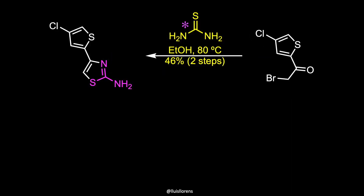Condensation with thiourea produces the thiazolamine ring of the molecule in 46% yield over two steps. This is the Hantzsch thiazole synthesis. When a thioamide or urea reacts with an alpha-halo ketone,